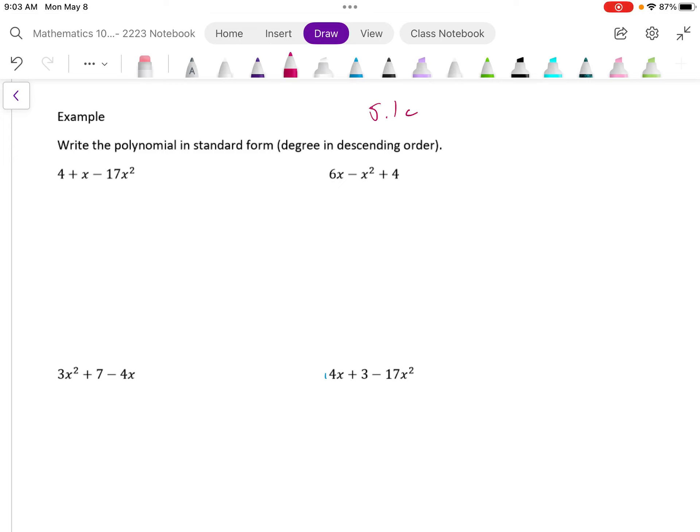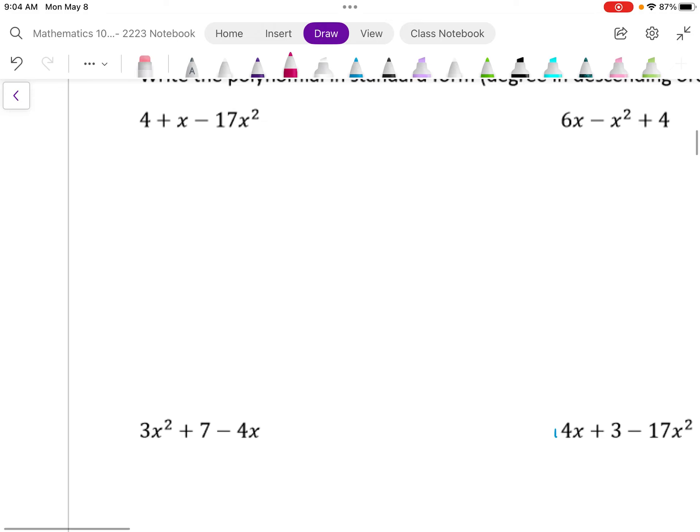I'm going to take this first one right here and I'm going to write this as 4x to the power of 0 plus x to the power of 1 minus 17x squared. Now what I'm going to do is I'm just going to reorder them so that we have the highest degree to the left.